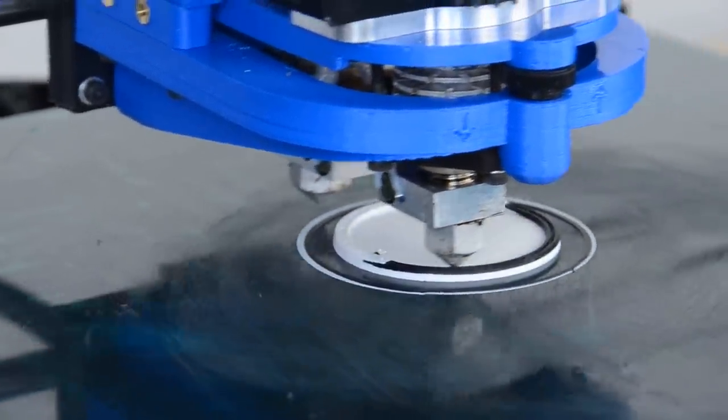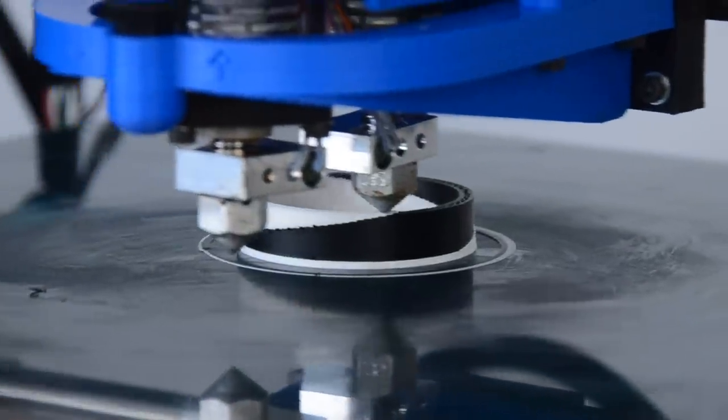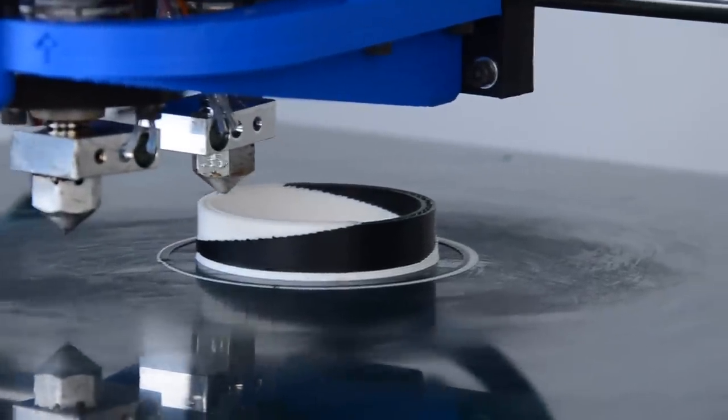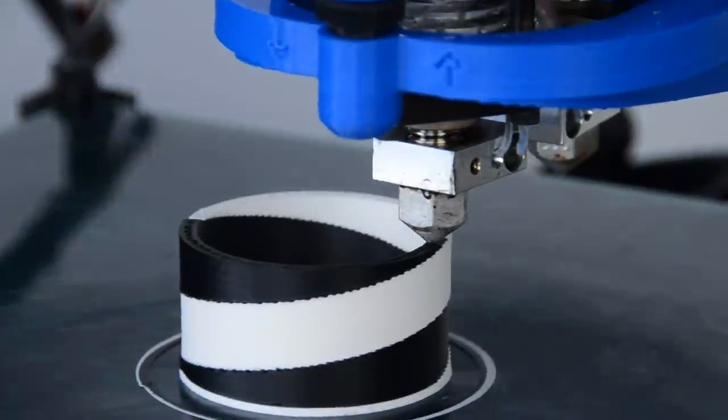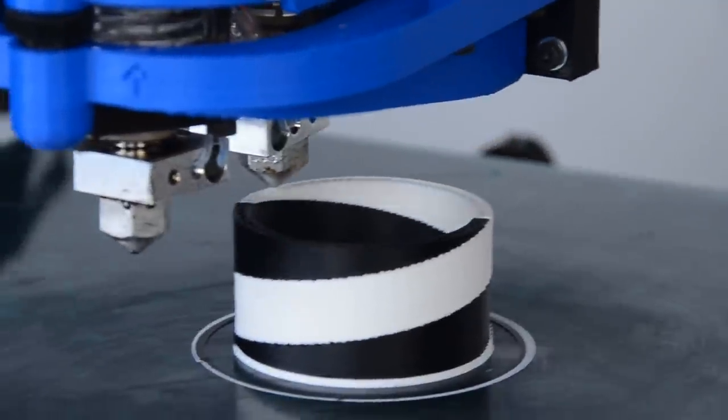It ships with two of our standard extruders, meaning you can print with a wide range of materials like PLA, ABS, HIPS, Laywood, Laybrick, and more. Or, as we're showing here, you can print with two different colors of the same material.